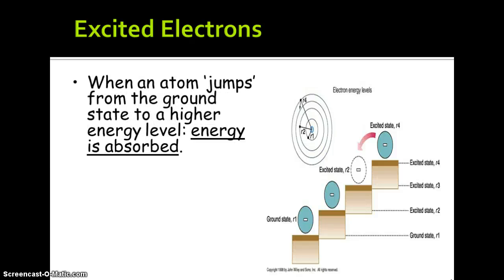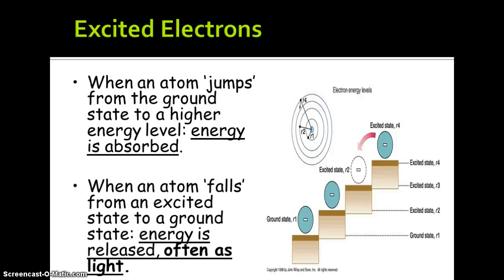When an atom jumps from the ground state to a higher energy level, energy has to be absorbed. But the atom doesn't like to keep that excess energy. It's kind of unstable, so it has to release that energy. When the atom falls from the excited state back down to the ground state, that energy has to be released. Most often, it is in the form of energy that we can see, or light.